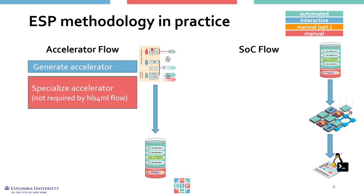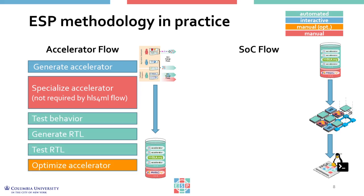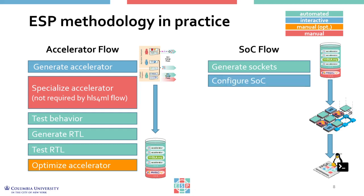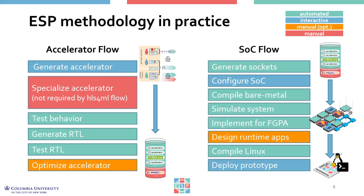The designer needs to fill in the computation part of the accelerator, as well as the data preparation and data validation functions in the test applications. Note that this manual step is not required by the HLS4ML flow because that one is fully automated. At this point, the accelerator and all test applications are ready, and all the following steps are about testing and optimizing. The SOC design flow is fully automated with some interactive steps. ESP automatically generates all the hardware and software to integrate the accelerators, including all wrappers and interfaces. Then with an interactive graphical interface, the user can configure the SOC, and from there it's a push-button flow that includes full system RTL simulation and finally full system prototyping on FPGA.